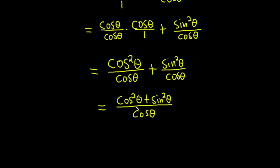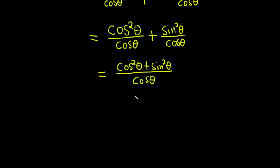And cosine squared plus sine squared is a familiar identity. It's equal to one. So this is equal to one over cosine theta, and one over cosine is just the secant function. So this is the secant of theta.